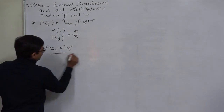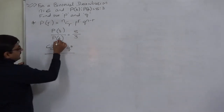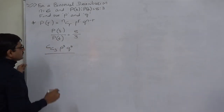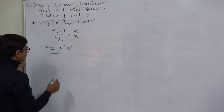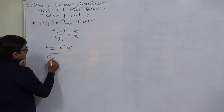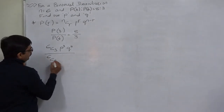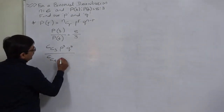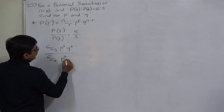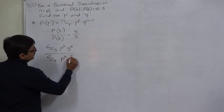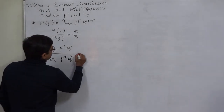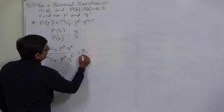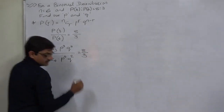For the denominator, the probability of 4 successes gives us 6C4 into P raised to 4 into Q raised to 6 minus 4, that is Q raised to 2. This entire expression equals 8 by 3.